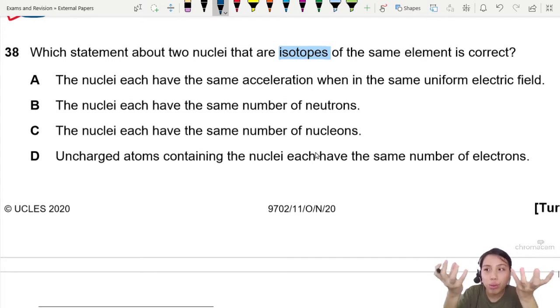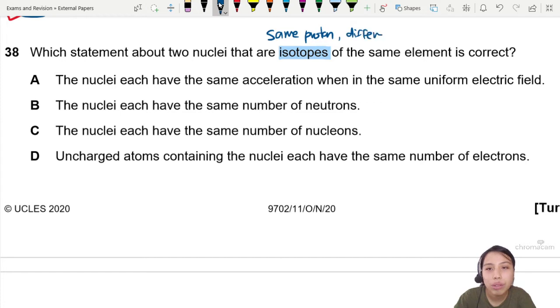That means you have two nuclei that have the same proton number. Means they are the same element, but different number of neutrons. So one could be a bit heavier than the other, depending on who is inside the nucleus.